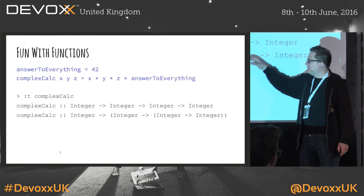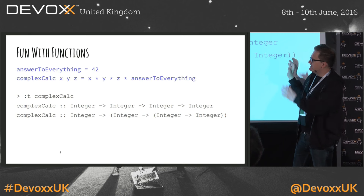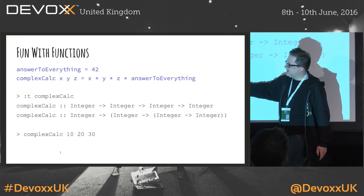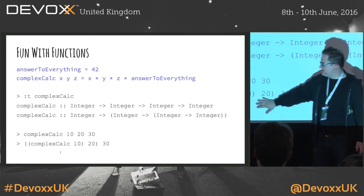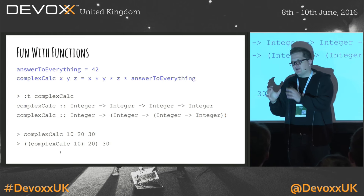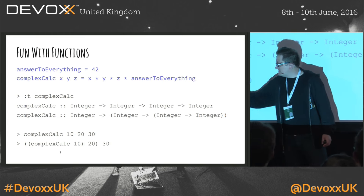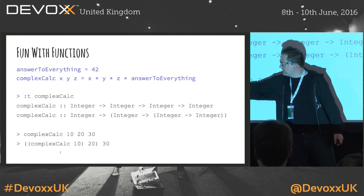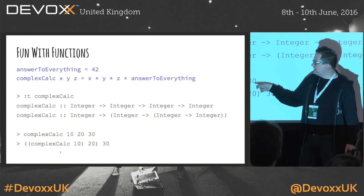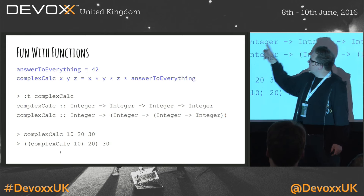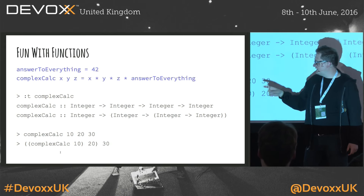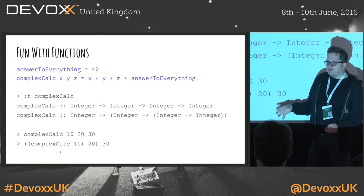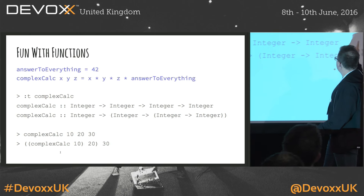Here's an example. We have the answer — the question for everything that can be asked in the universe, the answer is 42. We have a complex calculation function that takes three arguments and does a multiplication. Looking at the type definition, it takes an integer and returns a function that takes an integer and returns a function, and so on. When you call that function, like 'complexCalc 10 20 30', you first apply 10 to the first function which returns a new function, apply 20, which returns yet another function, apply 30, and that gives you the final result.